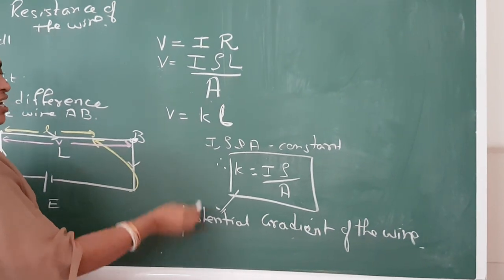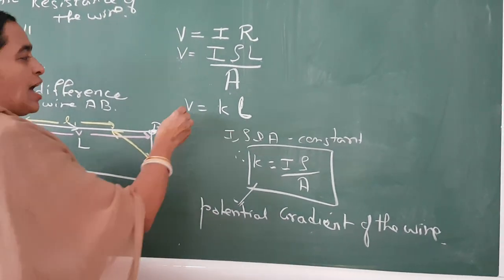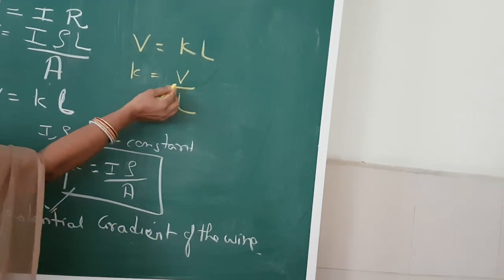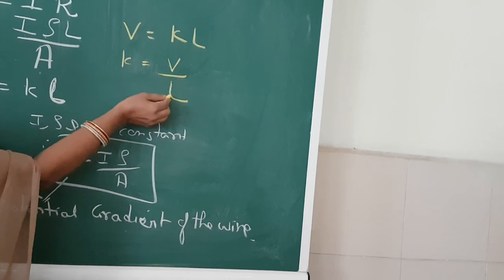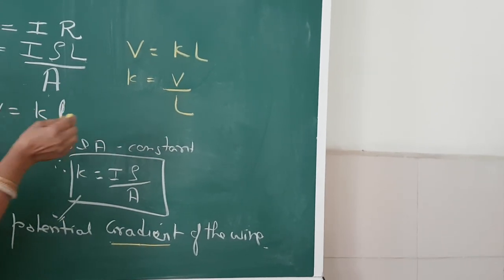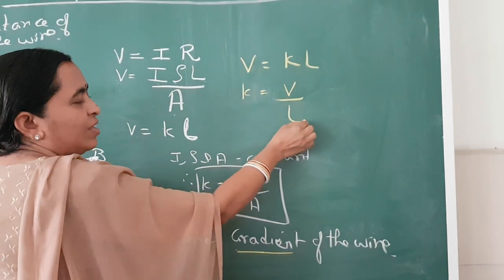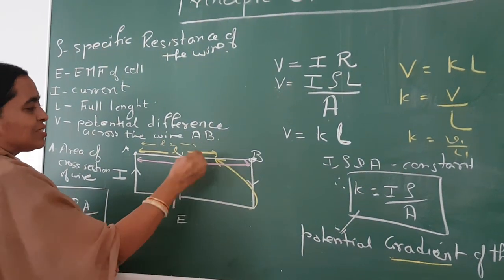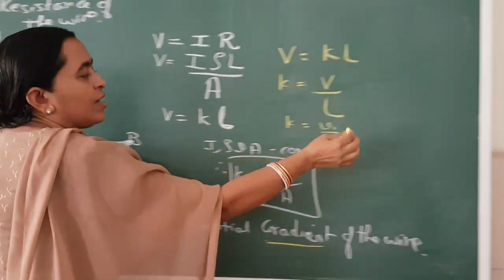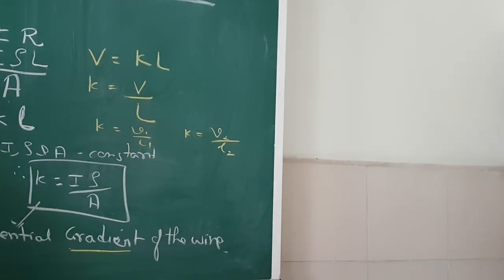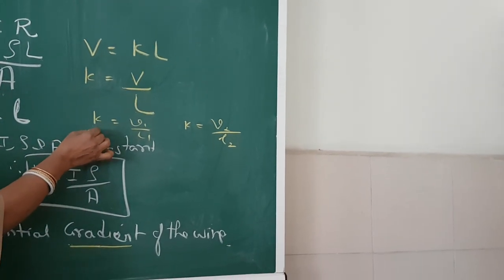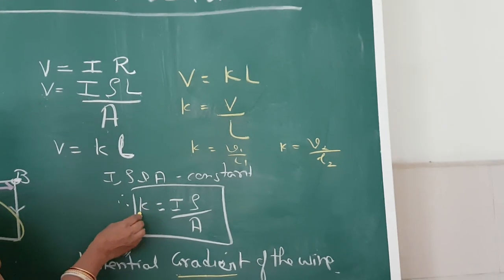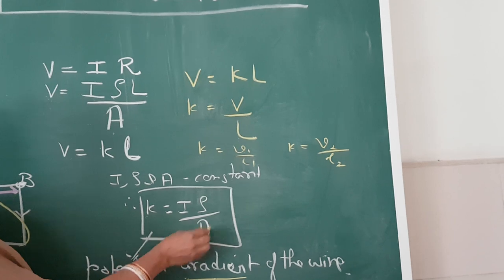Why is it called the potential gradient? From the equation V equals K into L, we get K equals V divided by L. So the potential difference changes with the length — that is how the word gradient is used. If the length is L1, then K equals V1 divided by L1. If the length is L2, then K equals V2 divided by L2. The potential gradient is the potential difference per unit length.